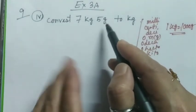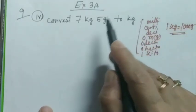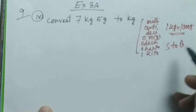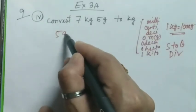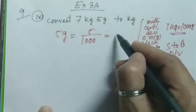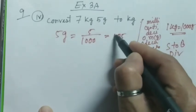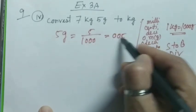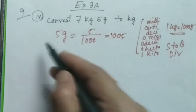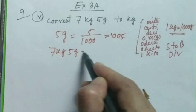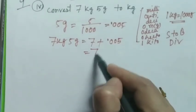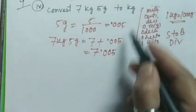That means 5 grams equals 5 divided by 1000. This equals 5, and we will add two zeros to make it three digits: 0.005. And here another 7 kg is there, so we'll add. So 7 kg 5 grams equals 7 plus 0.005 equals 7.005 kg.